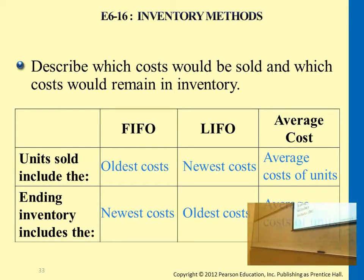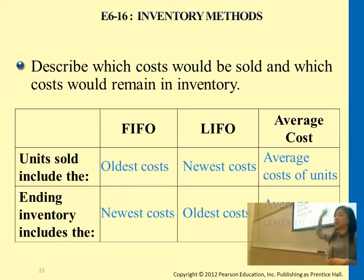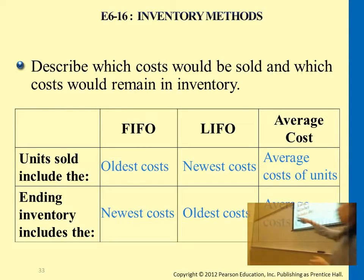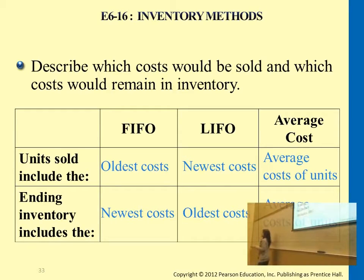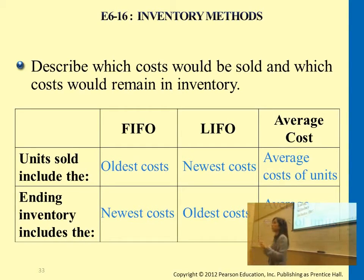Now some of the benefits of using these methods. If FIFO has the oldest cost for cost of goods sold expense, and in the case that purchase prices across different transactions are constantly rising, probably just incrementally a little bit — under this case, using FIFO, the cost of goods sold expense is always the oldest, which means it's the least. And this will lead to a higher net income amount.